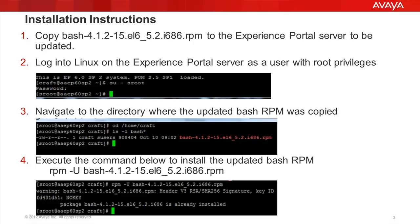Once this RPM is copied onto the EPM and the MPP servers, we need to log into the Experience Portal server using the root login. It can be Sroot for Avaya Enterprise Linux, and it can be root for Red Hat or custom Linux. Here we see we have logged in with Sroot, and we need to navigate to the directory where we copied the RPM — which is /home/craft in this example — where we can see the RPM present.